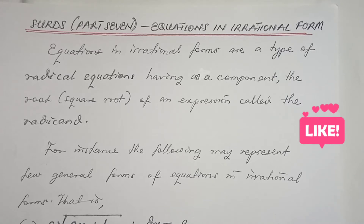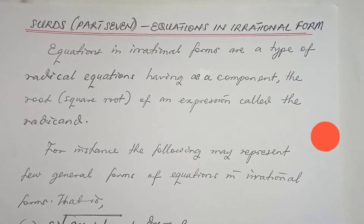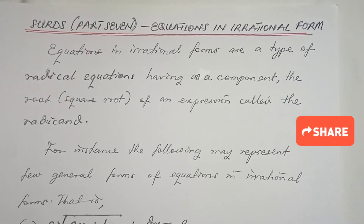When an equation has the root of an algebraic expression as its component, that kind of equation becomes what we call an irrational form of the equation, or in particular a radical equation. Now the algebraic expression under the root component of a radical equation is called the radicand.